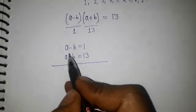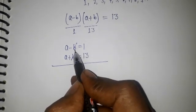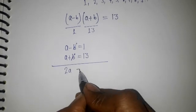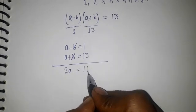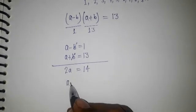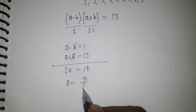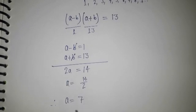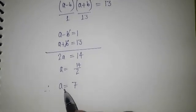Now if I'm adding these two numbers, -b and +b cancel, so we have 2a, and 1 + 13 = 14. So a = 14/2, that is a = 7.